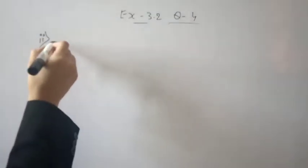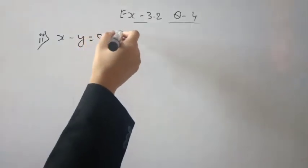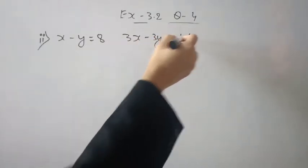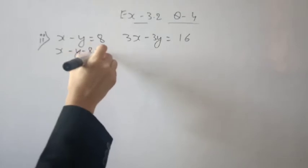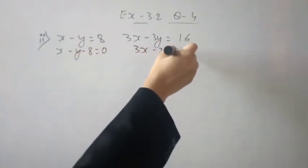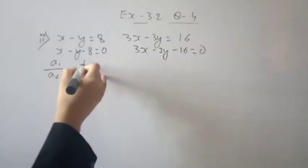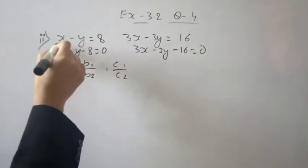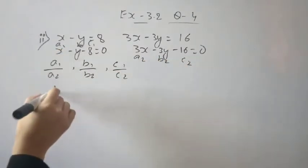The equation is given. Equation: x minus y is equal to 8, and 3x minus 3y is equal to 16. Rearranging: x minus y minus 8 is equal to 0, and 3x minus 3y minus 16 is equal to 0. Now compare a1 upon a2, b1 upon b2, and c1 upon c2 to check whether the equations are consistent or inconsistent.